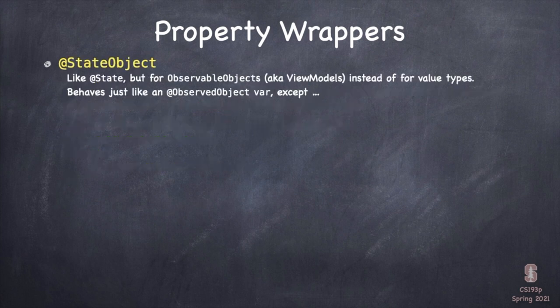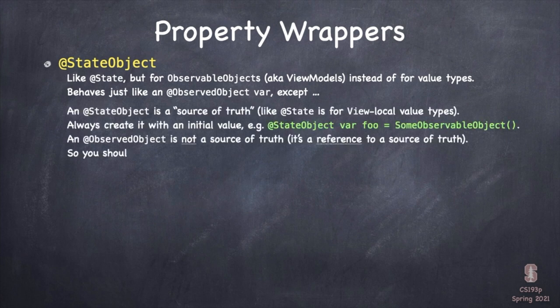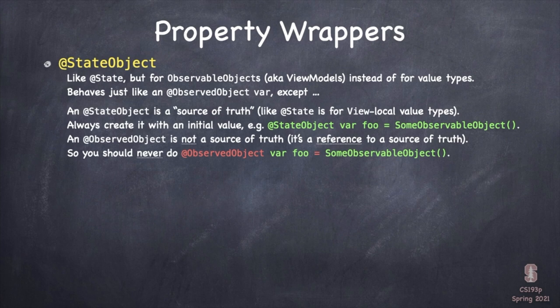There's something you've never heard of before: @StateObject. @StateObject is just like @State but for observable objects. If you wanted to have an @State var and the thing was going to be an observable object, you'd use @StateObject instead. @StateObject behaves just like @ObservedObject — all the view invalidation and all that — except that @StateObject is a source of truth, just like @State is for view-local information. You're always going to create an @StateObject var by setting it equal to something.